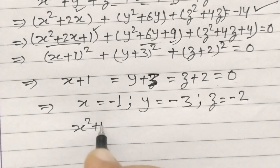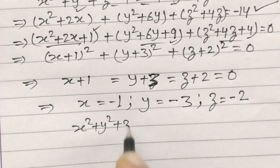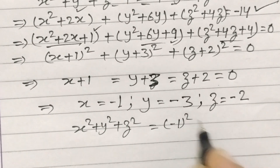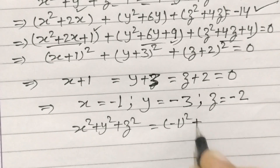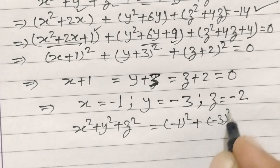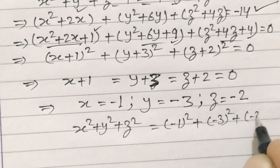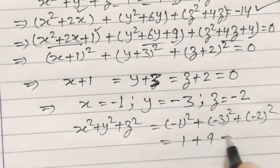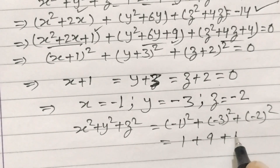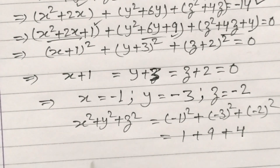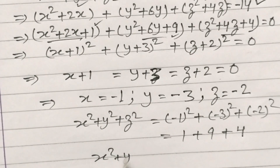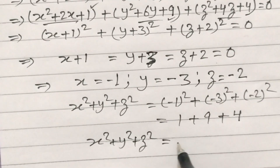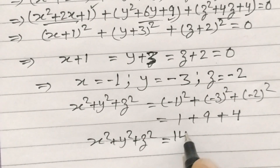So x squared plus y squared plus z squared is equal to (minus 1) squared plus (minus 3) squared plus (minus 2) squared, which gives 1 plus 9 plus 4. So x squared plus y squared plus z squared is equal to 14.